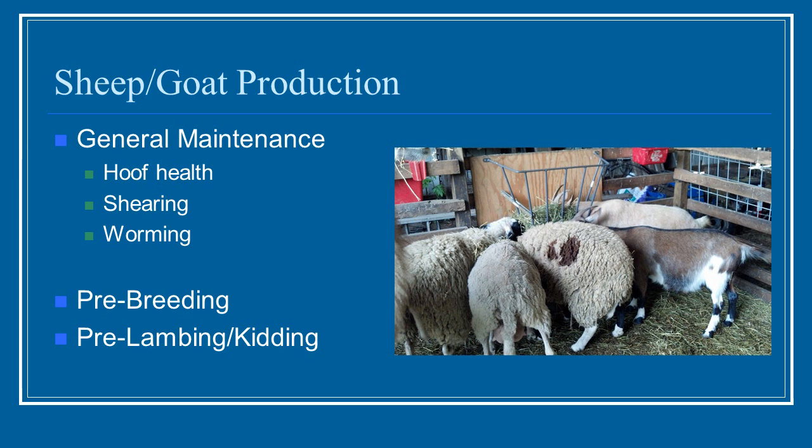As part of your scheduling, you'll need to include general maintenance that goes into sheep and goat production. As far as hoof health, will the hooves need to be trimmed? Will they need to be sheared? Will worming need to take place? You have things that need to be done during pre-breeding and also pre-lambing and kidding time. All of that needs to be incorporated into your production schedule, and it's very important if you are breeding animals.